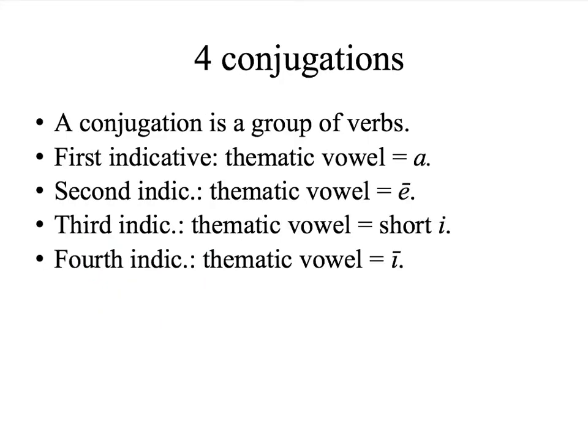Quick review. You know, or should know, that there are four groups of verbs called conjugations. Each conjugation has a thematic vowel. First conjugation: A. Second conjugation: long E. Third conjugation: short I. Fourth conjugation: long I.